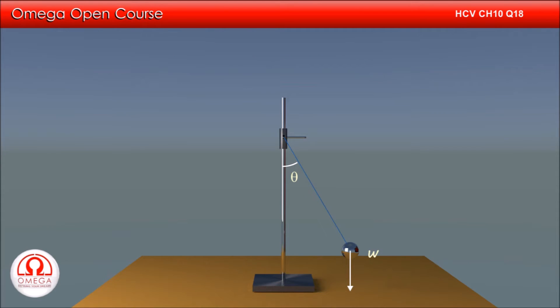Let us first draw the line of action of force for weight. In order to find the torque, we need to find the perpendicular distance of this line of action of force from the point of suspension. Let us draw a perpendicular to it from the point of suspension.